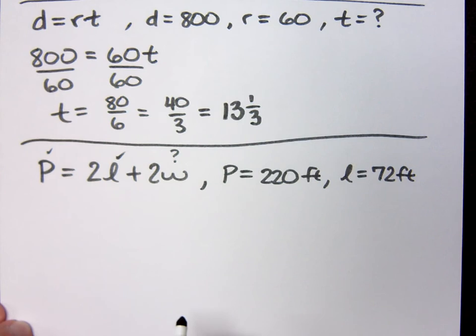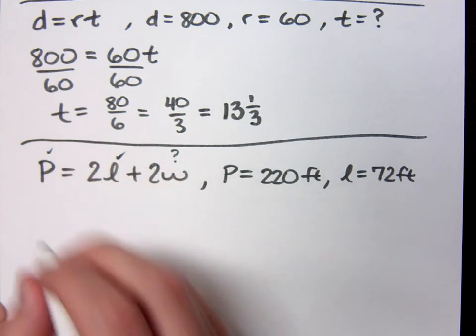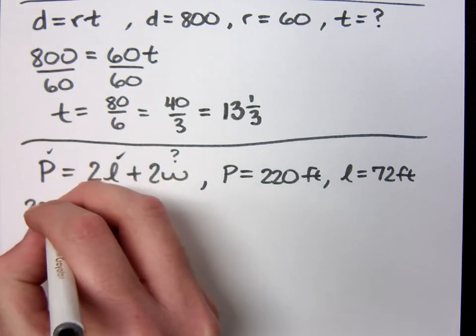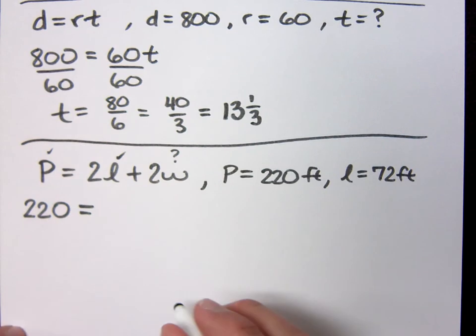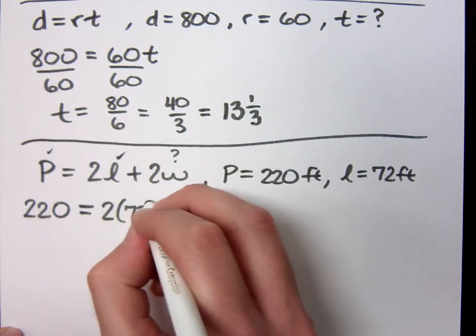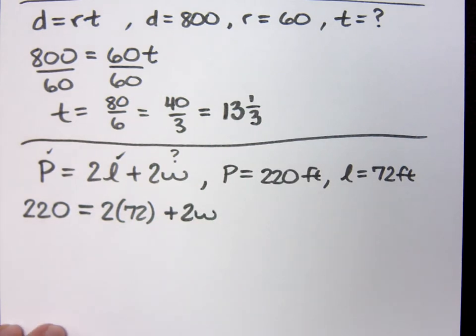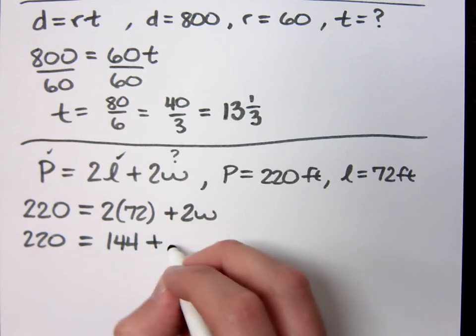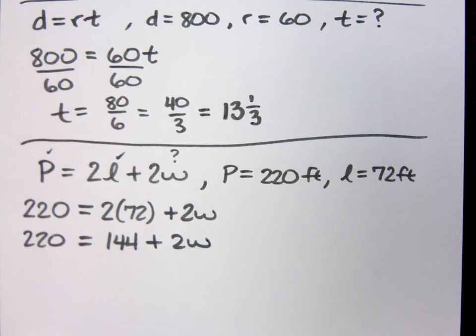My P is 220 and I told you my length is 72. I just got to find my W. Can you solve this equation? So 220 equals 2 times 72 is 144. Do you all agree? You can solve this equation. It's what we've been doing forever.